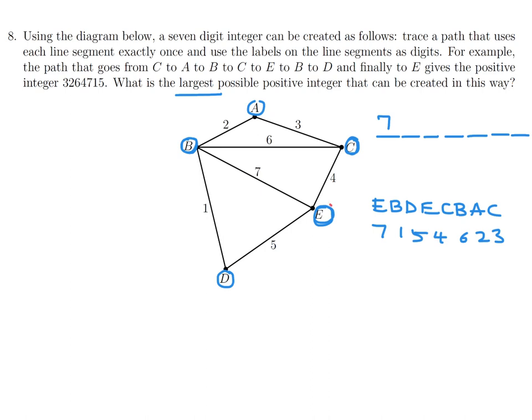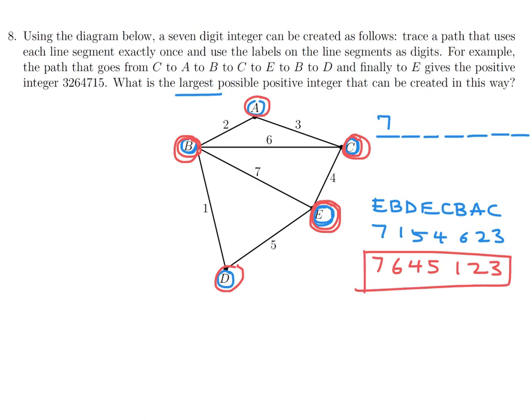Trying another path starting at E going to B then to C: E-B-C-E-D-B-A-C generates 7645123. That appears to be the largest. You can experiment to see if anything bigger is possible, but 7645123 is the best candidate.